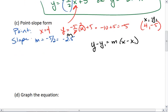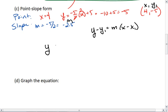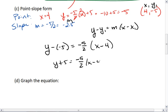Which means I now have y minus negative 5 equals negative 5 halves times x minus 4. So y plus 5 equals negative 5 halves times x minus 4.